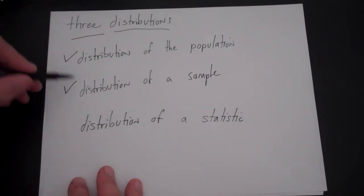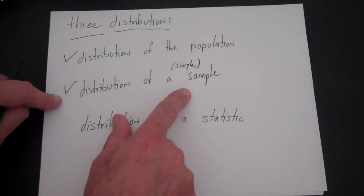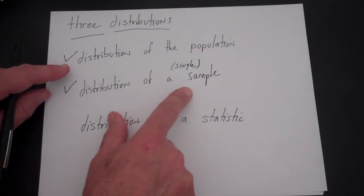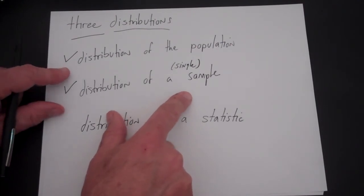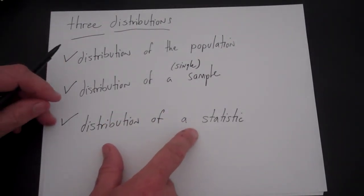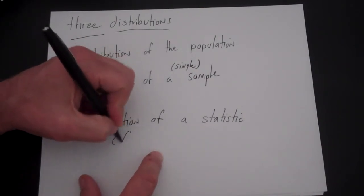and another distribution to think about is if we took not just one sample but many samples, what would be the distribution of the statistic from many samples.